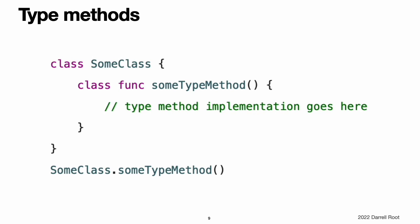Type methods. Instance methods, as described above, are methods that you call on an instance of a particular type. You can also define methods that are called on the type itself. These kinds of methods are called type methods. You indicate type methods by writing the static keyword before the method's func keyword. Classes can use the class keyword instead to allow subclasses to override the superclass's implementation of that method. Note: in Objective-C, you can define type-level methods only for Objective-C classes.